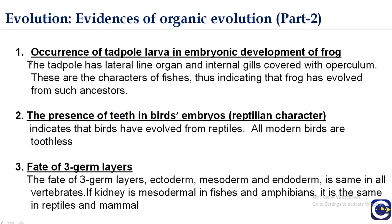Here are evidences from embryology. The occurrence of a tadpole larva in the embryonic development of the frog indicates that frogs might have evolved from such ancestors. The tadpole has a lateral line organ and internal gills covered with an operculum — these are characters of fishes — indicating that the frog evolved from fish-like ancestors. The presence of teeth in bird embryos is another example; teeth are present in reptiles, indicating that birds evolved from reptiles. All modern birds are toothless, so the presence of teeth in bird embryos is evidence from embryology.